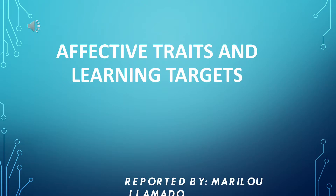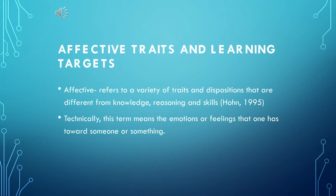Affective traits and learning targets. The word 'affective' refers to a variety of traits and dispositions that are different from knowledge, reasoning, and skills, according to Han 1995. Technically speaking, this term means the emotions or feelings that one has towards someone or something. Nevertheless, attitudes, values, self-concept, citizenship, and other traits are usually considered to be non-cognitive and include more than emotions or feelings.